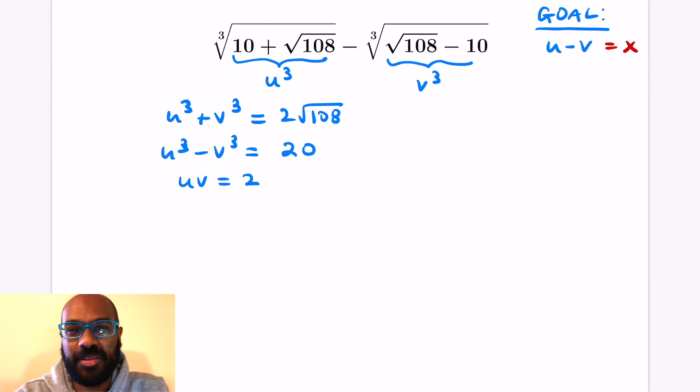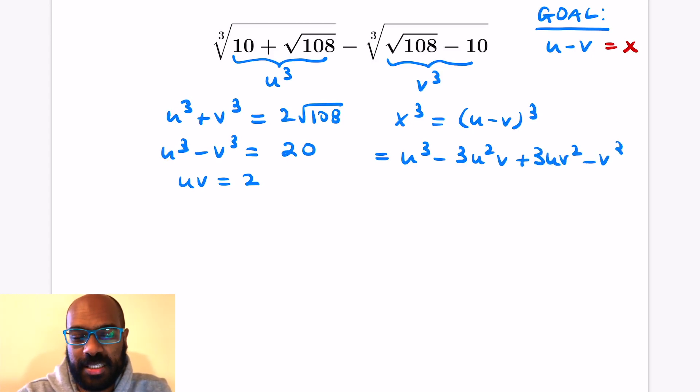I'm going to let x be this quantity that we're hoping for, u minus v. I'm going to start by cubing x. So that's the quantity u minus v all cubed. If we cube that by distributed property multiple times or using the binomial theorem, we get u cubed minus 3u squared v plus 3uv squared minus v cubed.